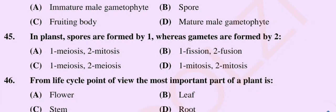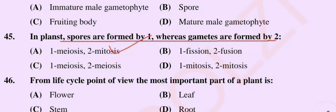Question number 45: In plants, spores are formed by one process, whereas gametes are formed by another. Option A: 1 meiosis, 2 mitosis. Option B: 1 fission, 2 fission. Option C: 1 meiosis, 2 meiosis. Option D: 1 mitosis, 2 mitosis. The correct option is option A: 1 meiosis and 2 mitosis.